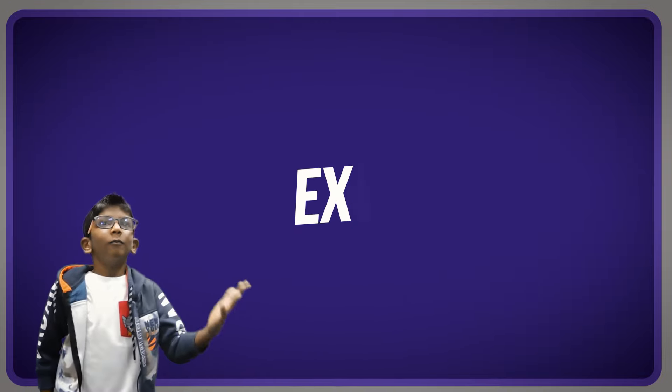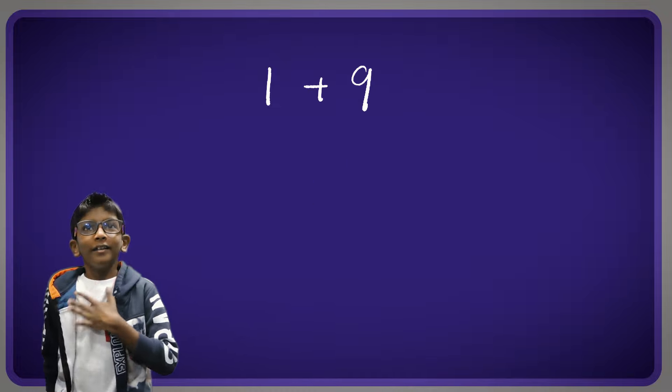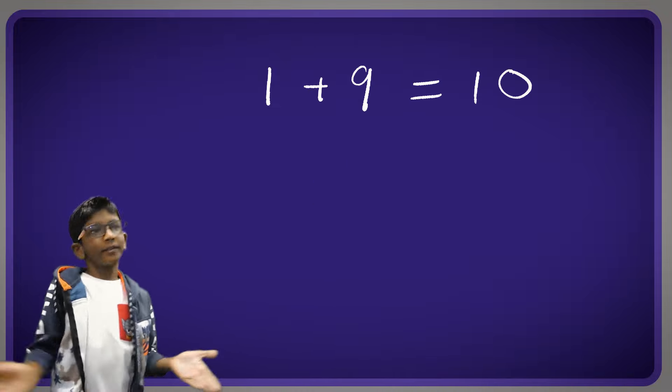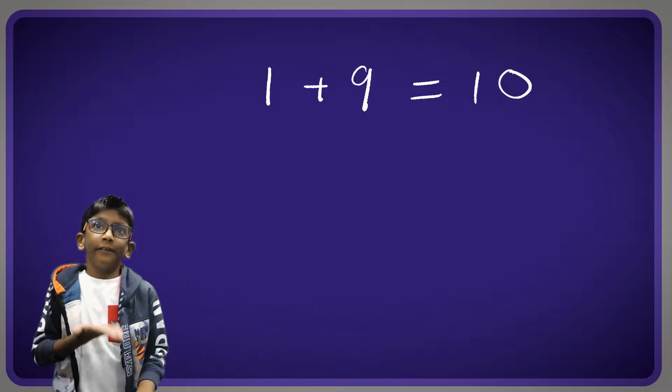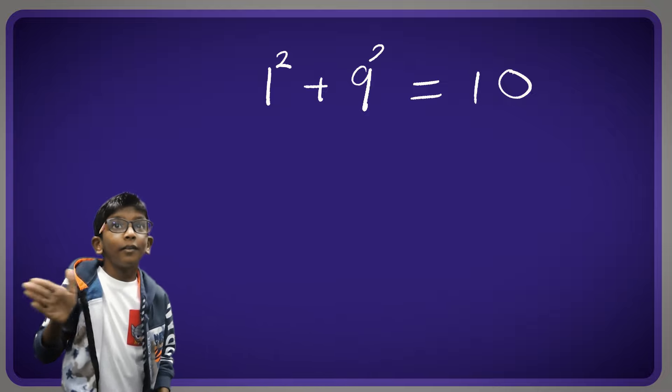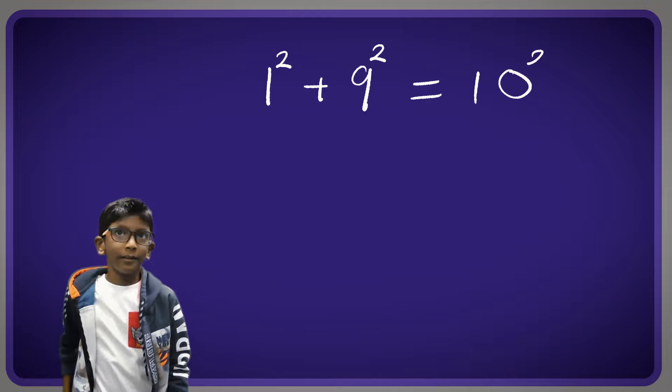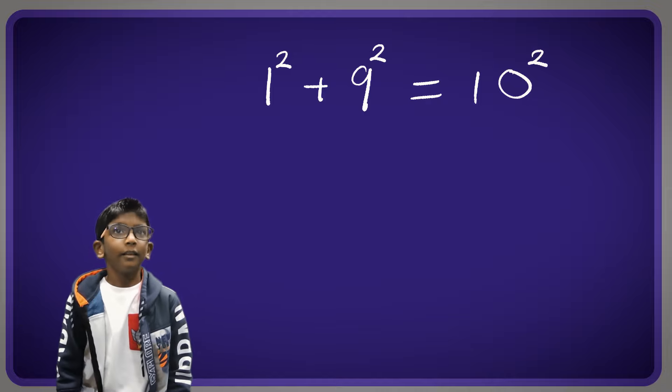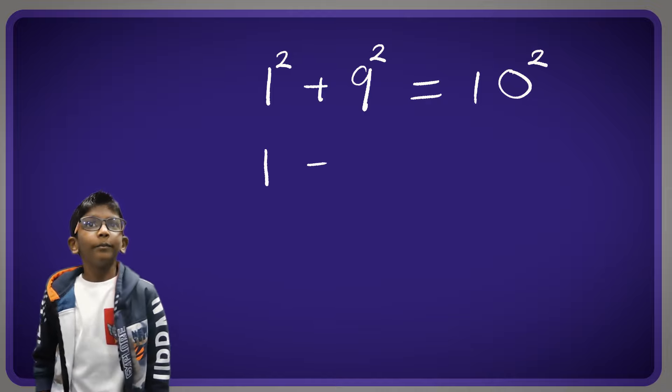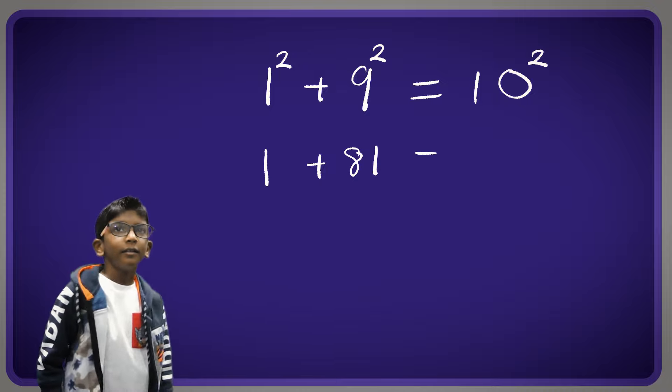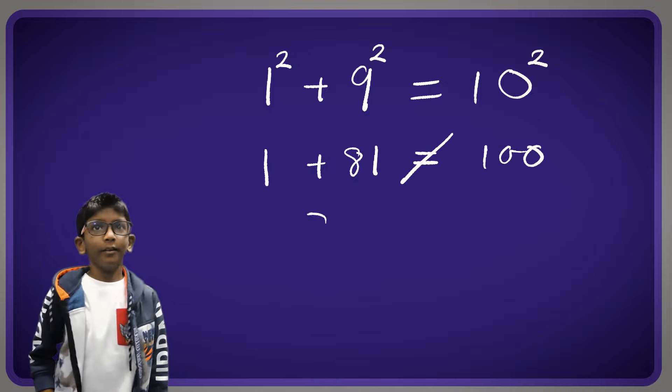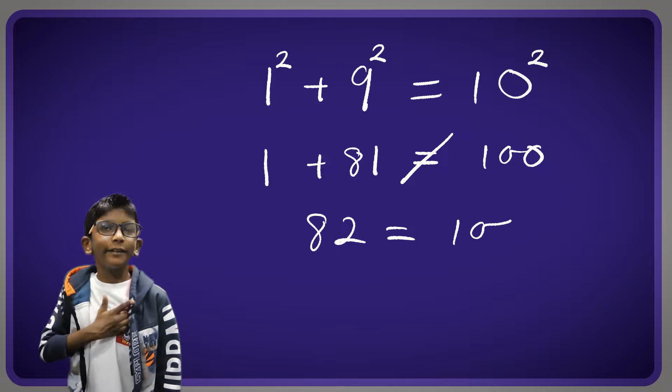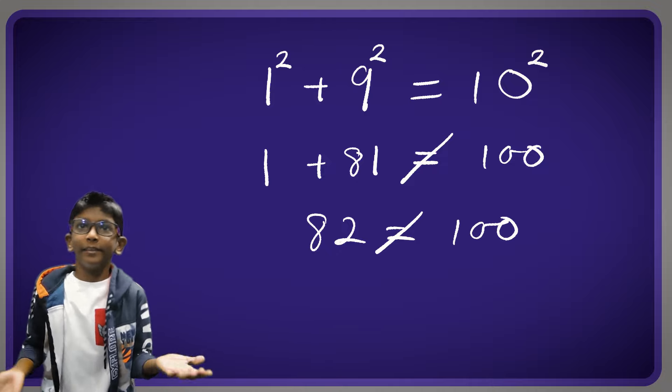So 1 plus 9 equals 10. Obviously this is correct. But when we square each and one of them individual, now it becomes wrong. Let's see why. So 1 plus 81 does not equal 100, because 82 does not equal 100. They can't be the same.